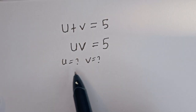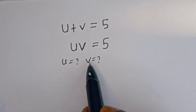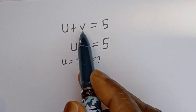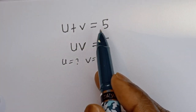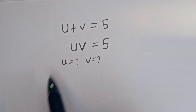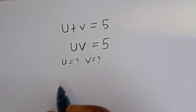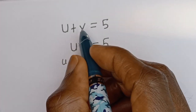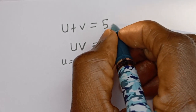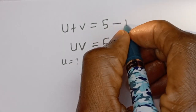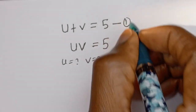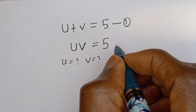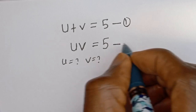Hello. How to solve for u and v in this equation: u plus v is equal to 5, and uv is equal to 5. u plus v is equal to 5 — let's call this equation 1. And uv is equal to 5 — let's call this equation 2.